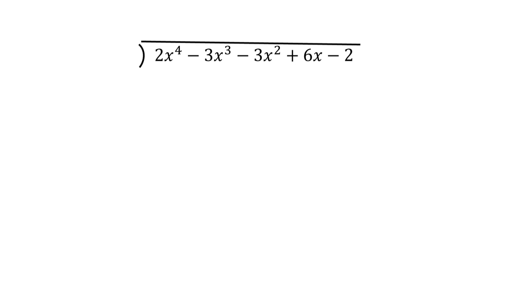Now let us divide P of x by x square plus 0x minus 2. Since here x is missing, we can put 0 into x.